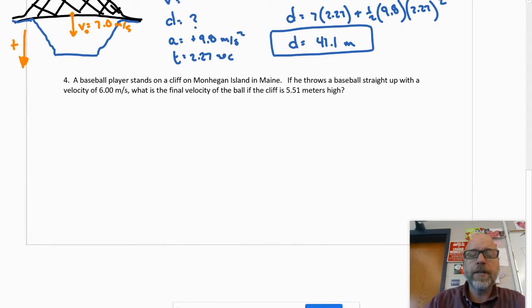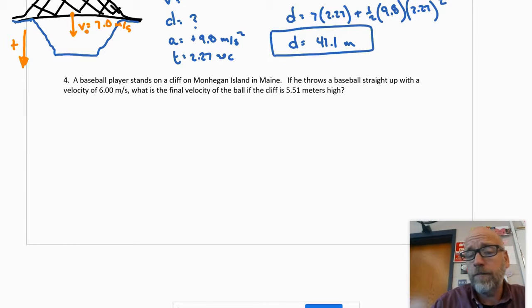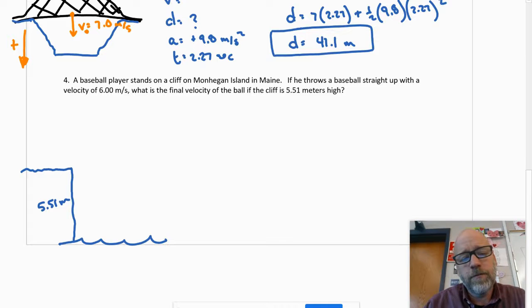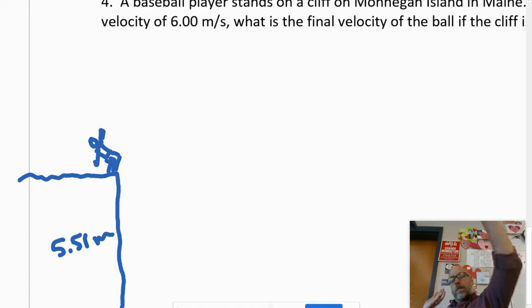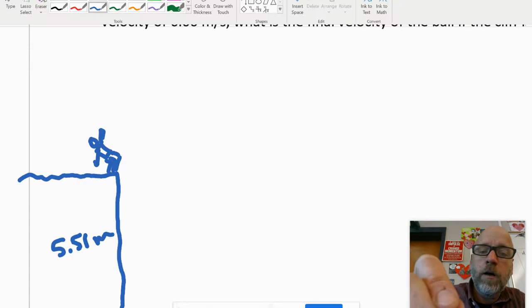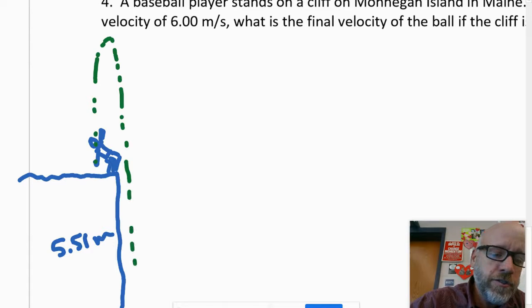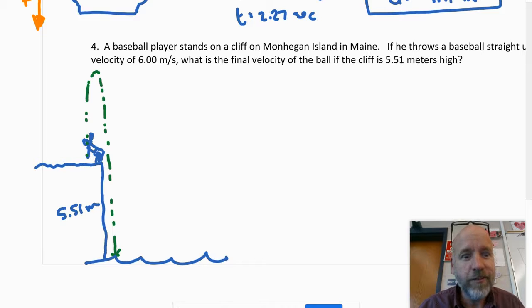A baseball player stands on a cliff on Monhegan Island in Maine. If he throws a baseball straight up with a velocity of six meters per second, what is the final velocity of the ball if the cliff is 5.51 meters high? Now I didn't say explicitly in the problem that it doesn't hit him in the head, but if he's standing on a cliff and the height of the cliff is given, then come on, just go with him, right? So here's the baseball player, he's leaning back, it's hard to throw a ball straight up. He's got his other arm sort of pointing up so he can throw it, and he throws that ball and it just misses him on the way down. Bam.